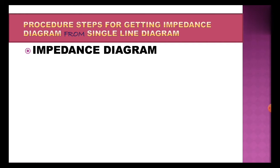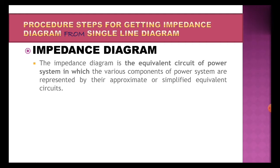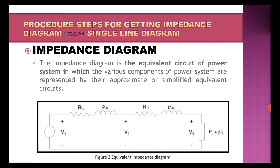Regarding the impedance diagram: the impedance diagram is the equivalent circuit of a power system in which the various components of the power system are represented by their approximate or simplified equivalent circuit. This is the equivalent impedance diagram of the power system, and it corresponds to the single line diagram. From the single line diagram we have obtained for the three-phase power system, we derive this equivalent impedance diagram.